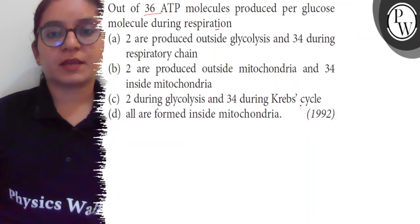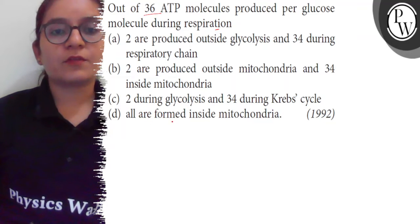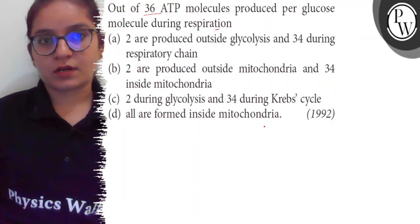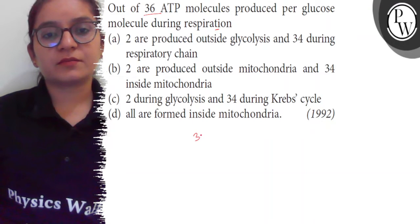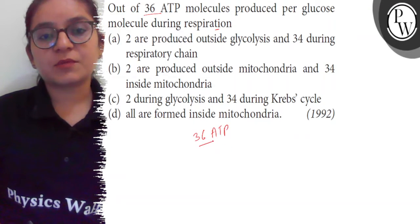glycolysis and 34 during Krebs cycle, (d) all are formed inside mitochondria. So during aerobic respiration, 36 ATP